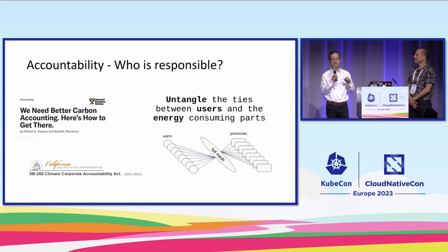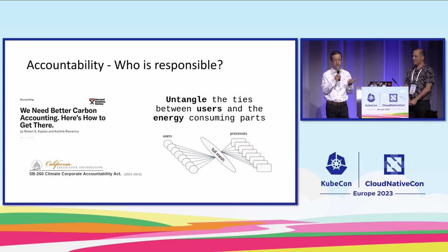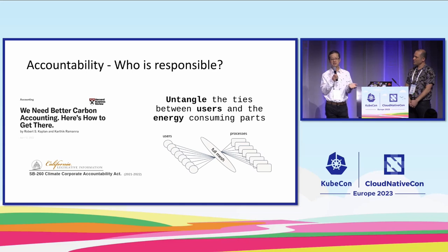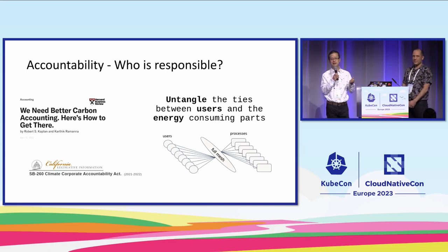If you say 'I'm a green data center' — by what metrics do you mean it's green? If you say 'I'm a green software infrastructure' — by what means? We want to bring some metrics and measurements into place, breaking down workloads at different levels, so when you see the APIs you consume, you have ideas of how much energy and carbon they are associated with.